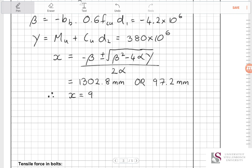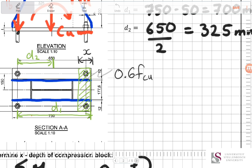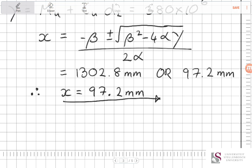Both are solutions to the equation, but the realistic one for the behaviour of the base plate is x = 97.2 millimetres — that is the depth of our compression block. If you cannot find a solution, it basically means the base plate is undersized and the forces are too high, so you need to make it bigger. Alternatively, if the moment is so low there is only compression under the base, there would be no tension and you would just solve for a compression block.